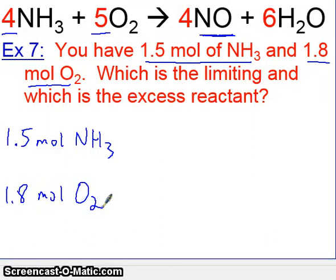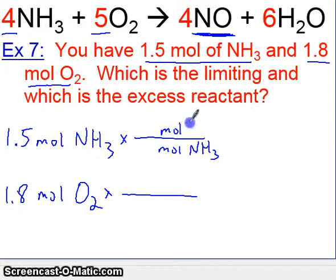Now let's convert both of these to our desired product, our selected product, NO. In this case, we'll convert from moles to moles. So we have moles of NH3. Moles of NH3 go down below, and moles of NO then would go on top. That's what we're trying to convert to. The relationship there is 4 to 4. And our answer is going to be the same, 1.5 moles of NO.